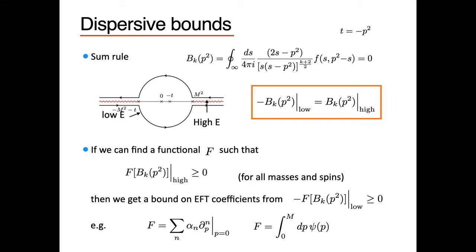Question: Is this just some property of scattering amplitudes from analyticity, something you could do in a non-gravitational theory? This has been done in non-gravitational theories by many people. There is something special about gravity — which kind of subtractions you can add while keeping these integrals convergent. Dispersion relations exist for any EFT, but there's something gravity-specific I'll mention. The connection between low-energy Wilson coefficients and high-energy partial waves can always be written down.